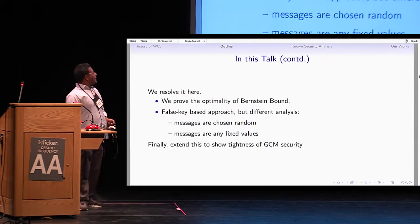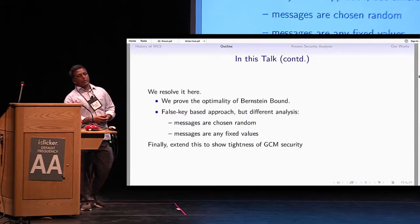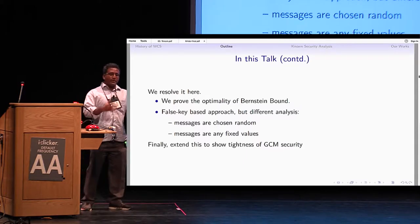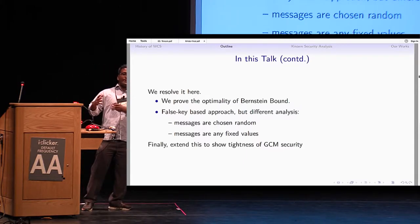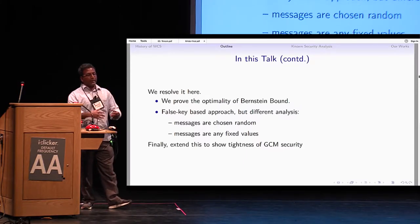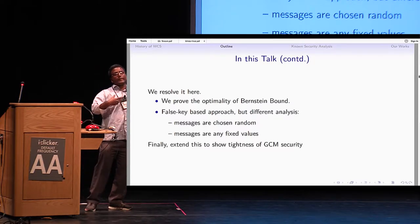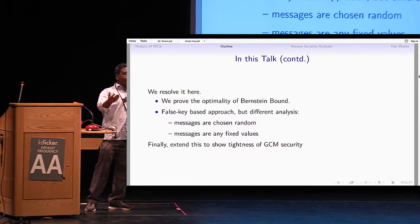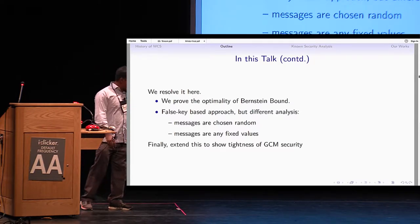Finally, we extend that attack to GCM as well, because a GCM tag is basically a Wegman-Carter authenticator where the ciphertext is authenticated rather than the plaintext.